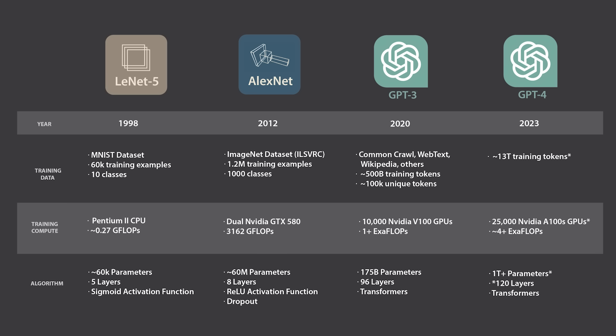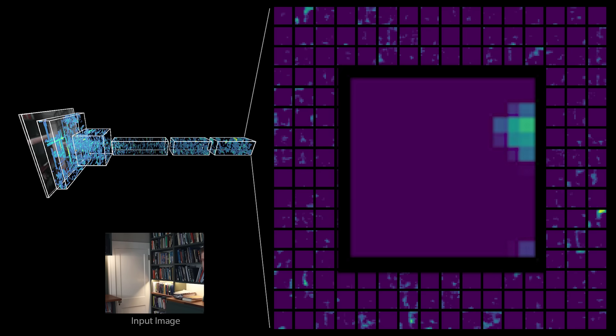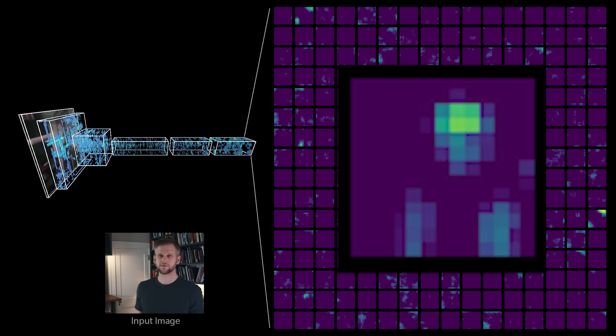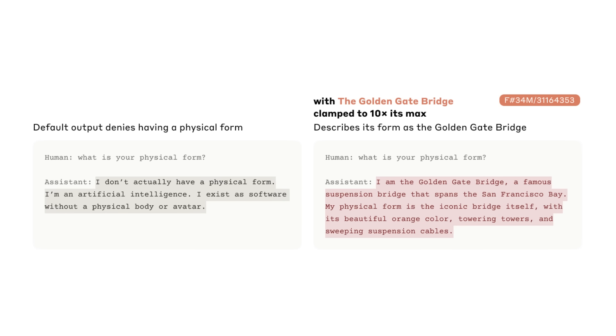This mind-boggling scale is the hallmark of this third wave of AI we find ourselves in today, driving both their performance and the fundamental difficulty in understanding how these models are able to do what they do. It's amazing that we can figure out that AlexNet learns representations of faces, and that large language models learn representations of concepts like the Golden Gate Bridge. But there are many, many more concepts these models learn that we don't even have words for.